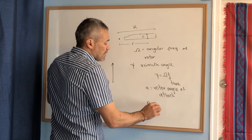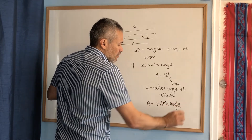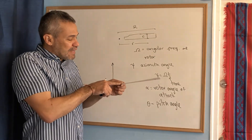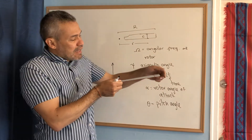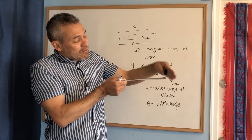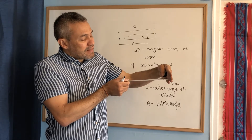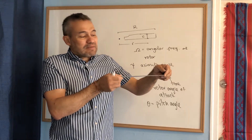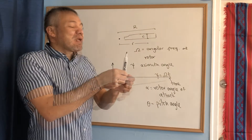Once we have the azimuth angle defined, we can define the pitch angle, usually denoted by theta. The pitch angle is the angle related with the line that goes through the center of the blade. That angle measures motion in a plane perpendicular to that line — essentially measuring this rotational motion of the blade section.